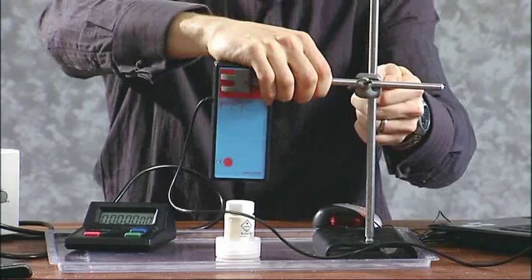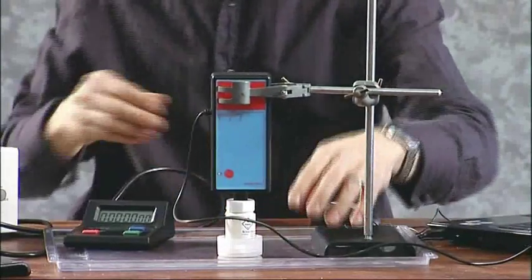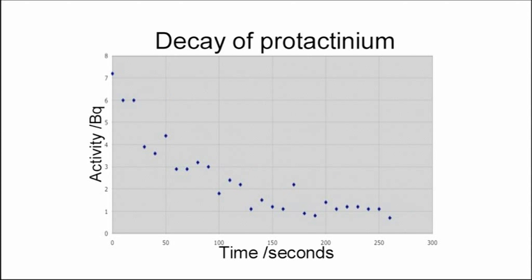Another way to measure the decay rate is with a computer data logger, which will plot the results on a graph. The count rate will increase for the first few seconds, so we exclude those. You can highlight that the points don't make a smooth curve because of the random nature of decay, but drawing a smooth curve through the points shows the trend of the readings.